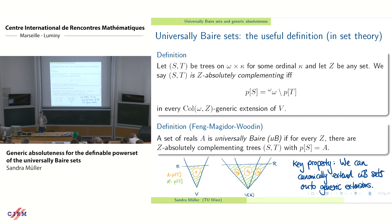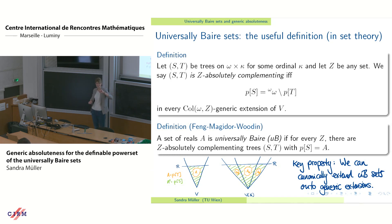Why is this the useful definition? The key property of the universally Baire sets is that we can use them to canonically extend things onto generic extensions. If you have your universe V and a set A in that universe, when you go to a generic extension you add new reals — which of these reals should belong to A? If you have the green and orange projections of the trees, this completely determines what the set should be in the generic extension, and this is the property that we want to use.